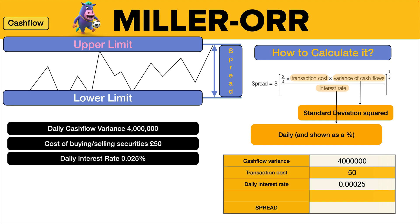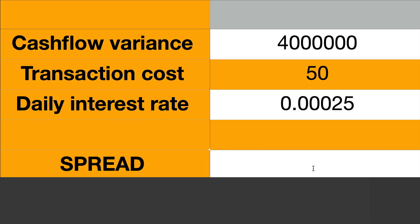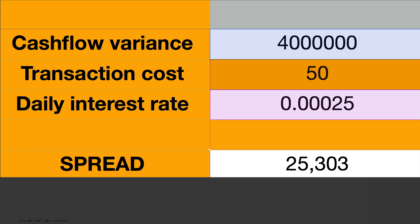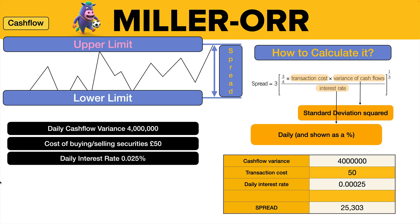We're going to put all that into a spreadsheet. You need a little formula: first you want three-quarters, which is 0.75, then simply multiply by cash flow variance, times transaction cost, divided by interest rate. All of that in brackets is then raised to the power of one third — 0.33333 — and then multiplied by three. That will give you your spread of 25,303.